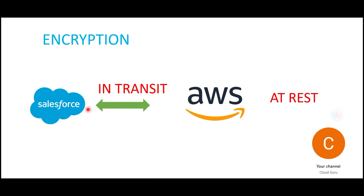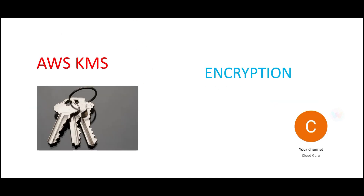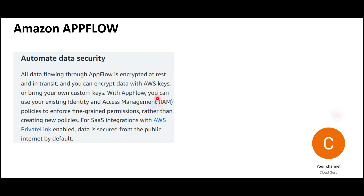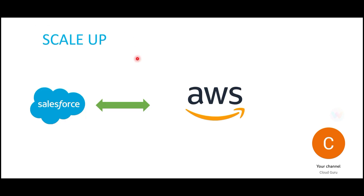While data moves from source to destination it is in transit - encryption in transit uses TLS protocol 1.2. At rest - at the database level or S3 level - you can encrypt using KMS or customer-managed keys. To summarize security: you can create IAM policies, leverage encryption both at rest and in transit. AppFlow is fully secure.